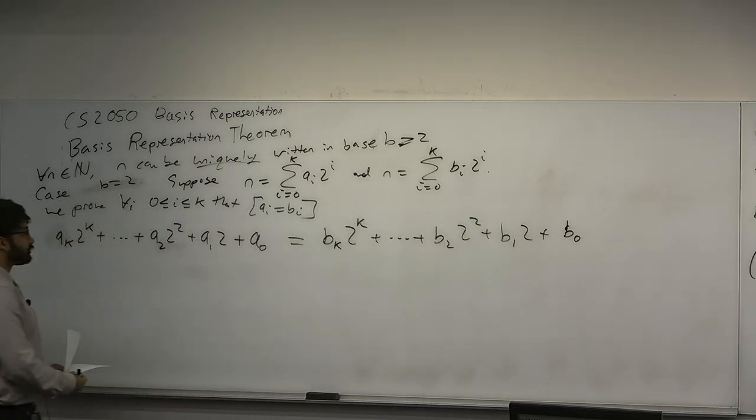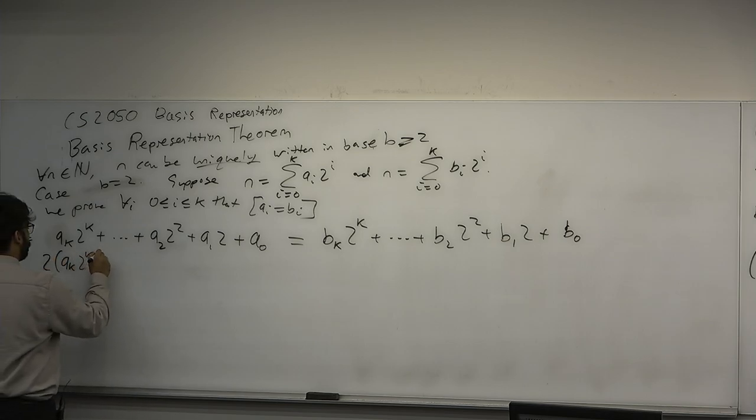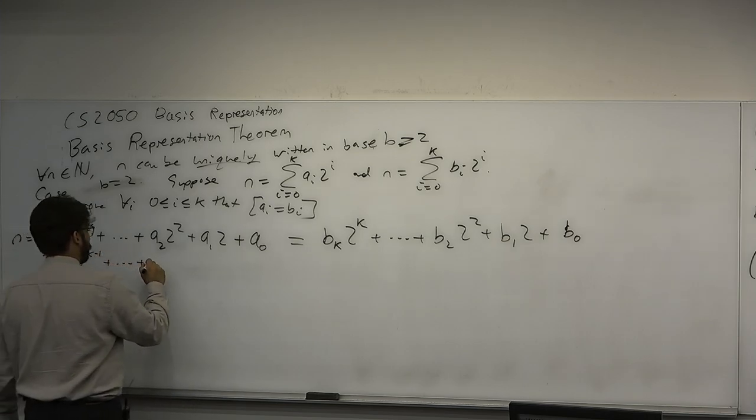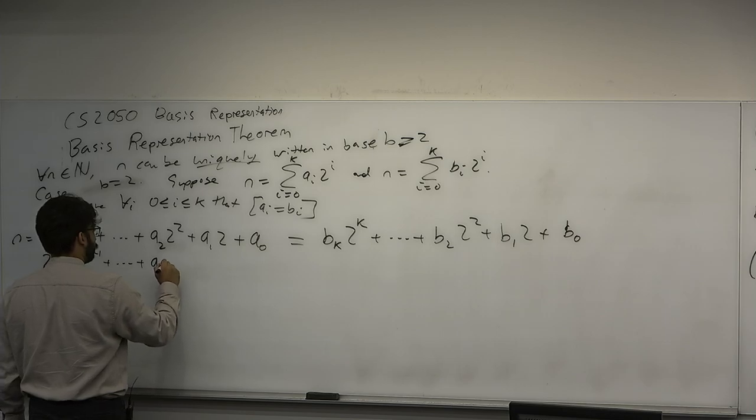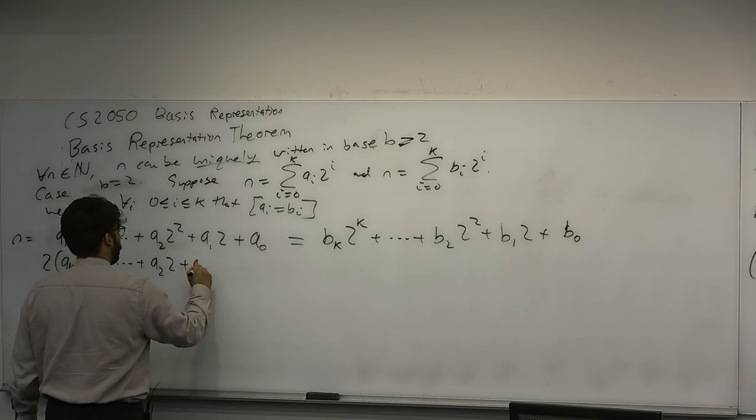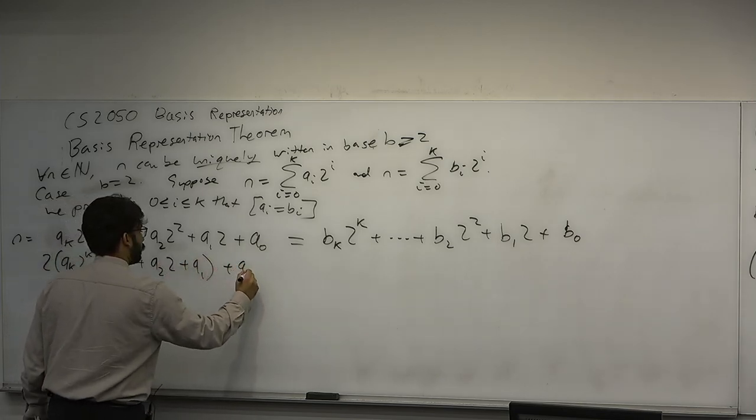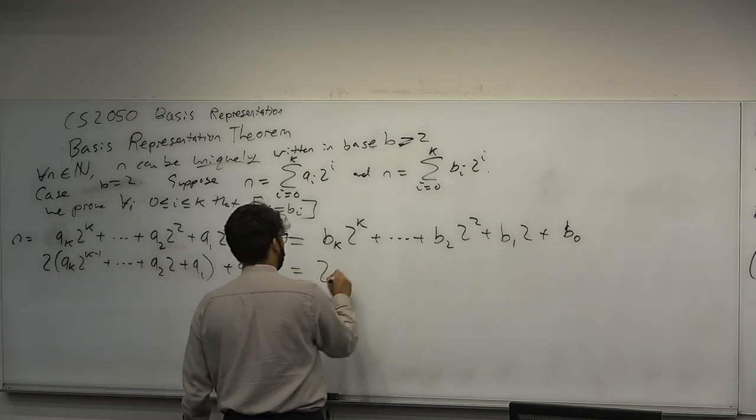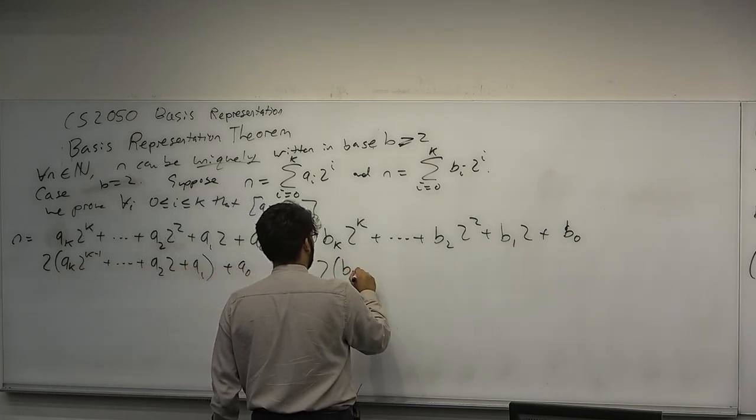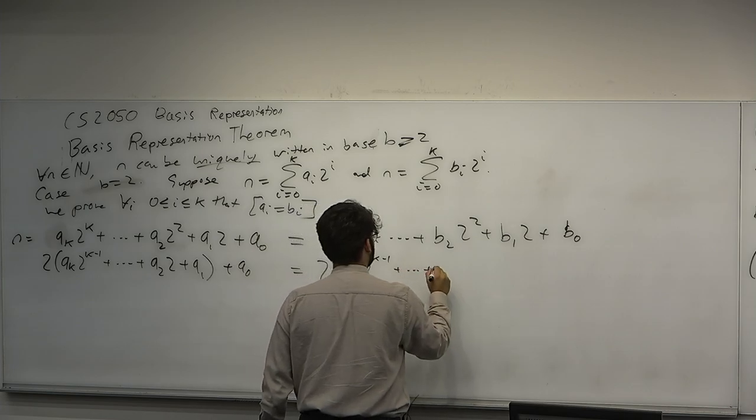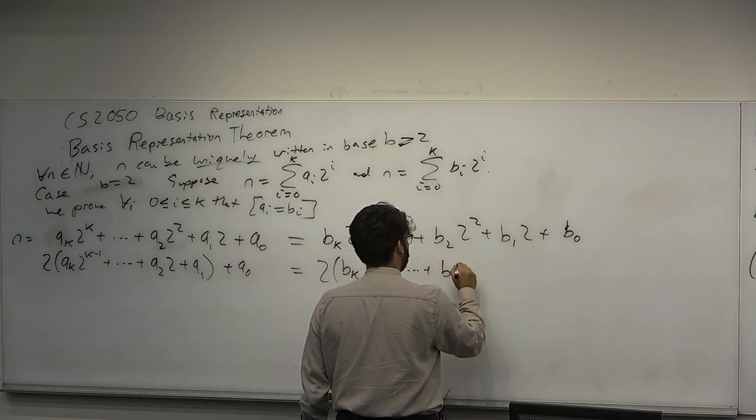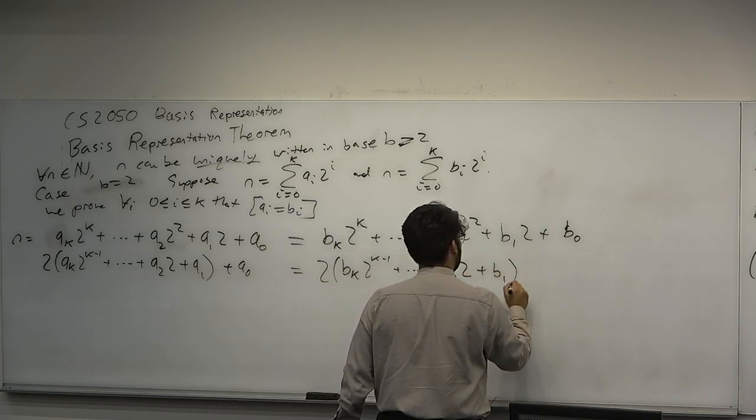Now notice that the first, if there's k digits, the first k minus 1 of them all have a power of 2. Let's factor out the 2. We're going to get 2 times a_k times 2 to the k minus 1, plus a_2 times 2 plus a_1, plus a_0, which is equal to 2 times b_k times 2 to the k minus 1, plus b_2 times 2, plus b_1, plus b_0.